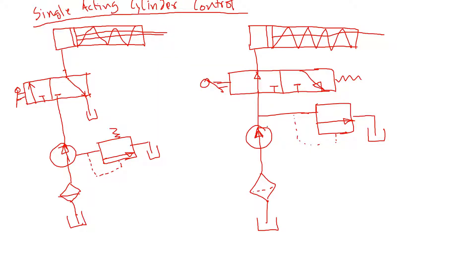Single-acting cylinder control: a single-acting cylinder can only extend — it moves in one direction. So if the fluid is coming this way, it will extend all the way and then stop. There is no back and forth. That's called a single-acting cylinder. Now this piece here is a directional valve — it basically directs the flow.